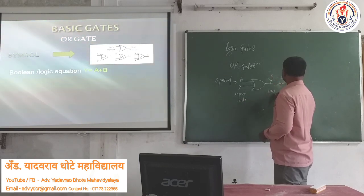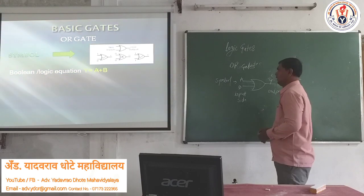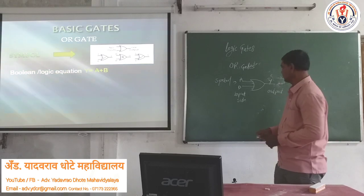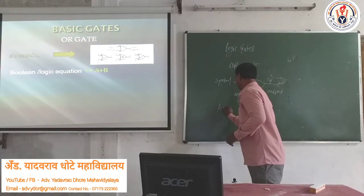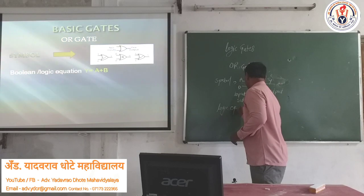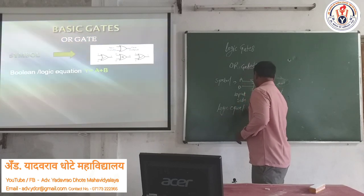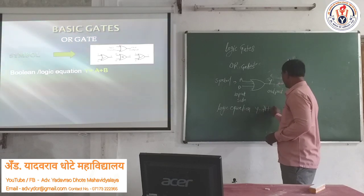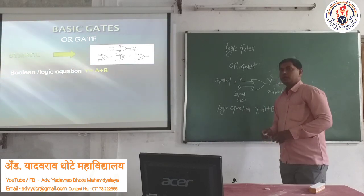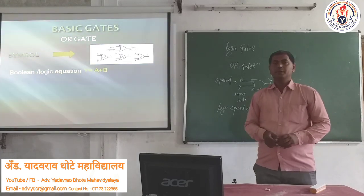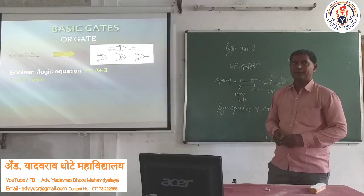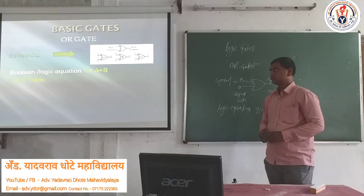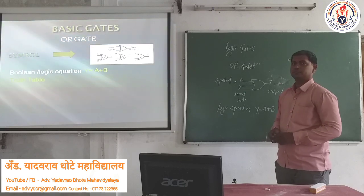Y is the output. Next, the Boolean equation or logic equation — this is the mathematical equation. The logic equation is Y equal to A plus B. Plus is the operand; the symbol represents the OR operation, which is addition: A plus B.